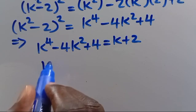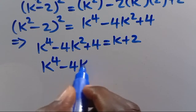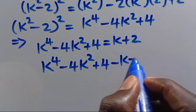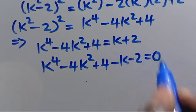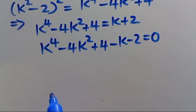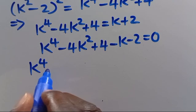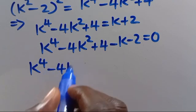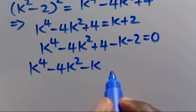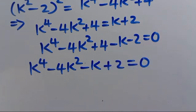Rearranging, we have k⁴ - 4k² + 4 - k - 2 = 0, which simplifies to k⁴ - 4k² - k + 2 = 0.